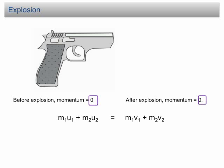Now, let's look at the equation. This time, the U1 and U2 is zero, because the gun and the bullet do not move before the explosion. Therefore, the equation becomes zero equal to M1V1 plus M2V2.